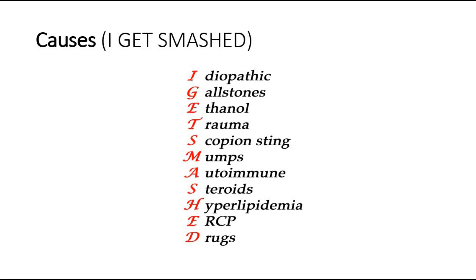A is for autoimmune disorders, for example Sjogren's syndrome or systemic lupus erythematosus. Steroids can also cause acute pancreatitis. Metabolic diseases like hypercalcemia or hypertriglyceridemia, ERCP, and also drugs like NSAIDs and diuretics.